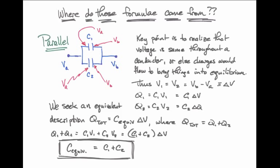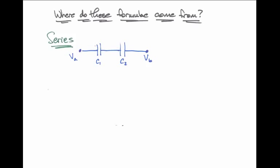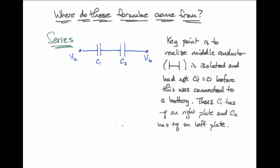If I would like to know where the formula comes from for the series capacitance case, then I have to remember something different. Here the key point to realize is that this conductor in the middle, this plate plus that wire plus this plate, are electrically isolated. They are not connected to the rest of the circuit.